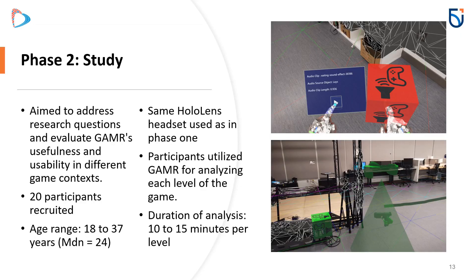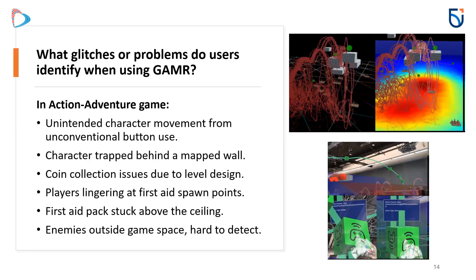The second phase of the study aims to address the key research question and evaluate GAMR's usefulness and usability across different game contexts. We recruited 20 participants aged 18 to 37 years, with a median age of 24. Using the same HoloLens headset from the first phase, participants analyzed each game level with GAMR. Each level was analyzed for 10 to 15 minutes, providing valuable insights into GAMR's performance and utility. Our main goal was to determine if developers could actually identify glitches or problems in the games using the tool.